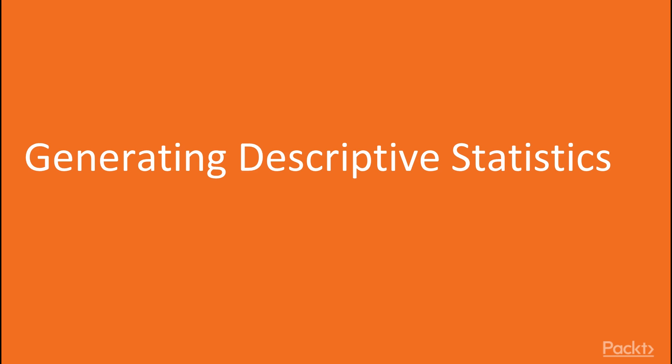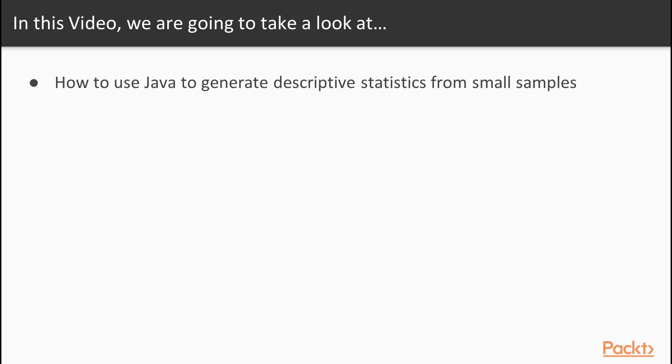Now we move on to the first video of this section that deals with generating descriptive statistics. Descriptive statistics are used to summarize a sample and are not generally developed based on probability theories. In this video, we'll see how to use Java to generate descriptive statistics from small samples.